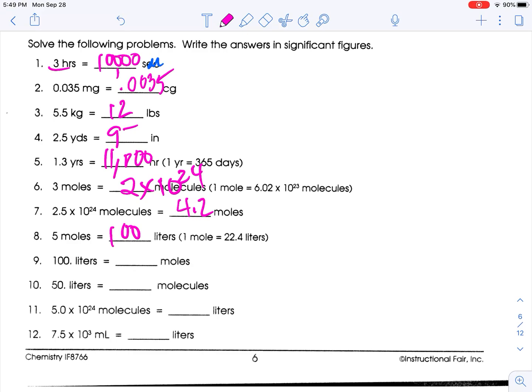100 liters to moles. 22.4 liters is 1 mole, we just learned that. 100 divided by 22.4 gives me 4.46428. The 4 is not enough to round that up, so it's 4.46 moles.